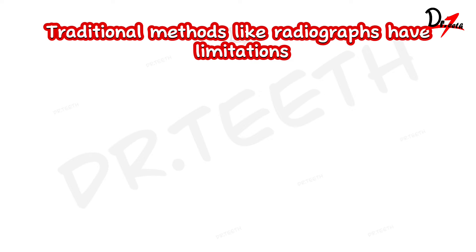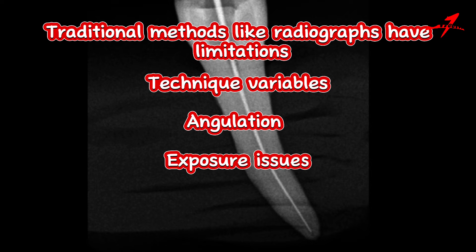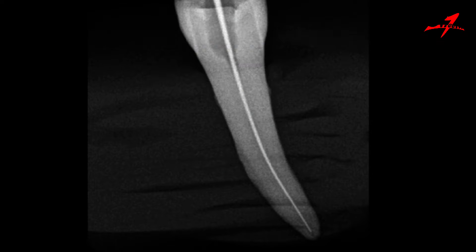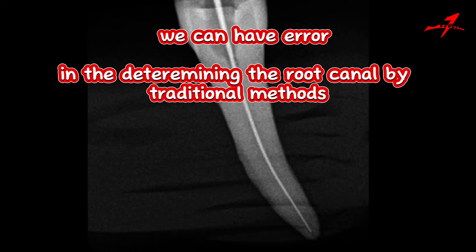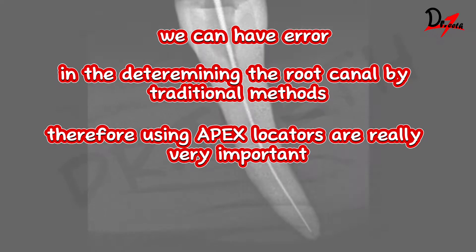Traditional methods like radiographs have limitations in accurately determining the root canal length. There are various factors in radiographs such as technique variables, angulation, exposure issues, and obviously x-rays are 2D images. Because of this, we can have error in determining the root canal by traditional methods. Therefore, using Apex Locators is really very important.